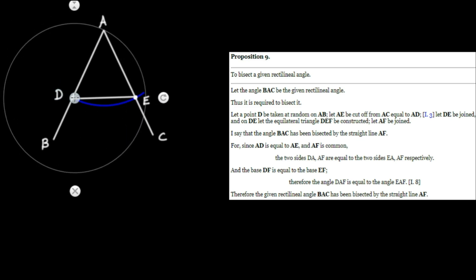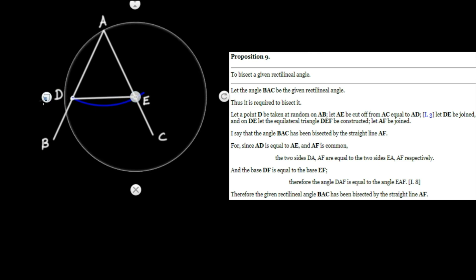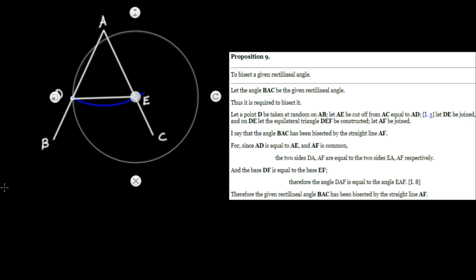We place our center at E. The radius is going to be E over to D. And what I'll do is I'll just draw a little bit of a circle. And I'll do the same for D.